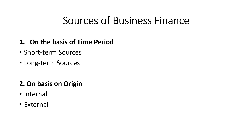Sources of business finance can be categorized on the basis of time period and on the basis of origin. On the basis of time period, it is categorized into short-term sources and long-term sources. Short-term sources are those required to be repaid within an accounting year, that is within 365 days, and include bank borrowings, public deposits, trade credit, provisions and other current liabilities.